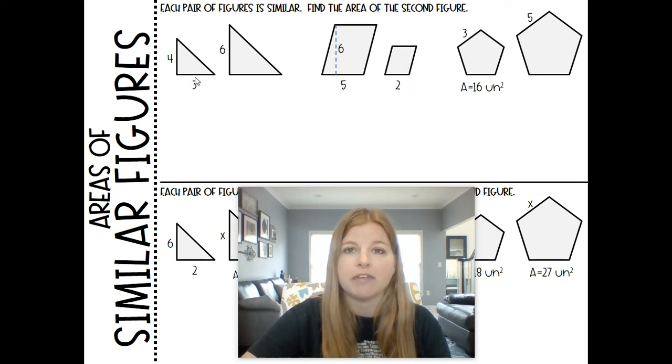The first area of this triangle 1 half base times height. So 4 times 3 is 12 divided by 2 is 6. So the first area of this triangle is going to be 6. Now I don't know the area of the second triangle. I'm just going to call it A. But I do see the scale factor from one figure to the other figure. It's 4 to 6. And that scale factor 4 over 6 would need to get squared.